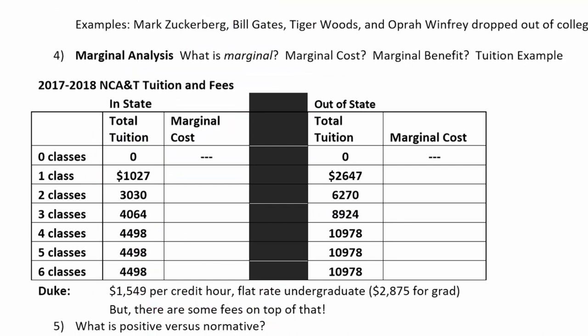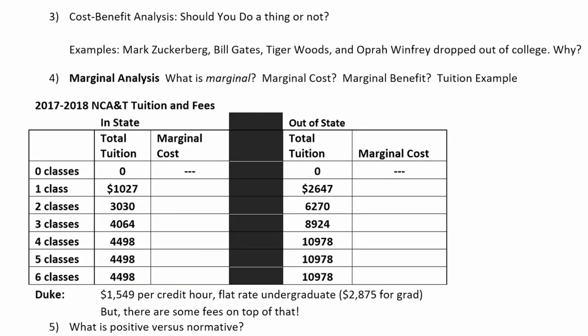One of the big things we do in economics is cost-benefit analysis. A lot of the field involves figuring out the correct way to measure costs and the correct way to measure benefits — that's a lot of what the Copenhagen Consensus spent time, money, and expert knowledge doing. The basic idea is simple: measure the cost of doing something, and if the cost is less than the benefit, do it. But if it's going to cost a million dollars to get only a hundred thousand dollars in benefits, certainly don't do it.